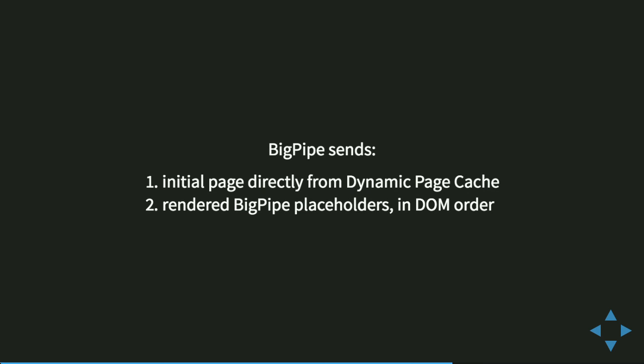Drupal already provides infrastructure to have different strategies — BigPipe is just an additional one. Conceptually, BigPipe sends the initial page directly from the dynamic page cache, while page cache and BigPipe are on the same level in terms of optimization. Page cache is as fast as you can get for anonymous users. BigPipe layers on top of the dynamic page cache, which caches the skeleton — the parts of the page that are not placeholders. Then BigPipe can send that right away, and then starts sending the BigPipe placeholders in the order they appear in the DOM. Conceptually, that's all you need to know.